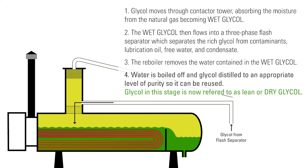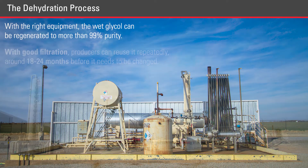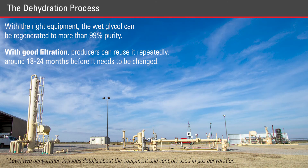Glycol in this stage is now referred to as lean or dry glycol. With the right equipment, the wet glycol can be regenerated to more than 99% purity. With good filtration, this allows producers to reuse it repeatedly — around 18 to 24 months before it needs to be changed.